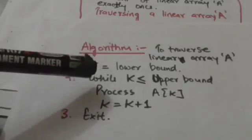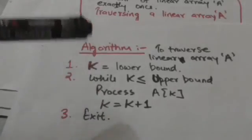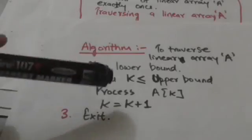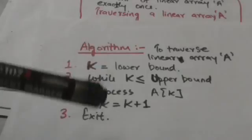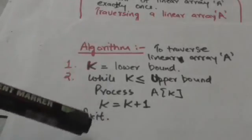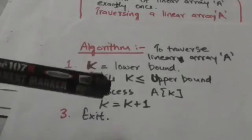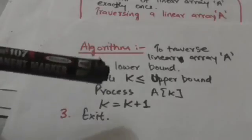If K is greater than upper bound, we will stop. Otherwise, we will process the element A[K] and increase K by 1, and repeat this procedure until K becomes greater than upper bound.